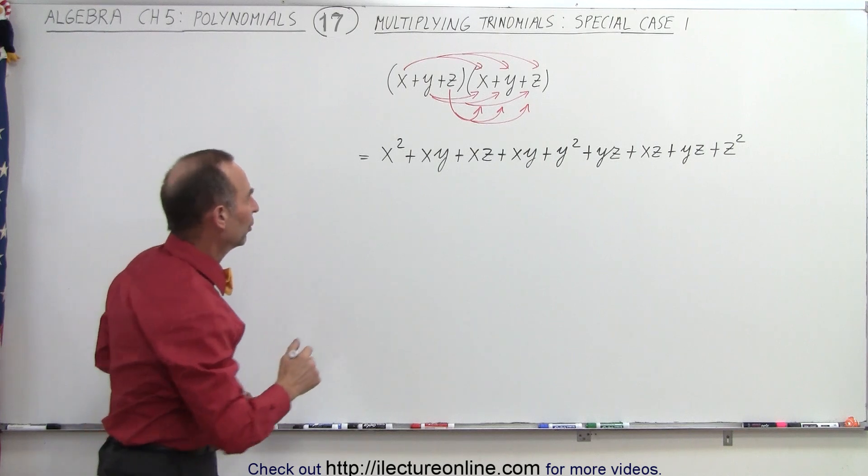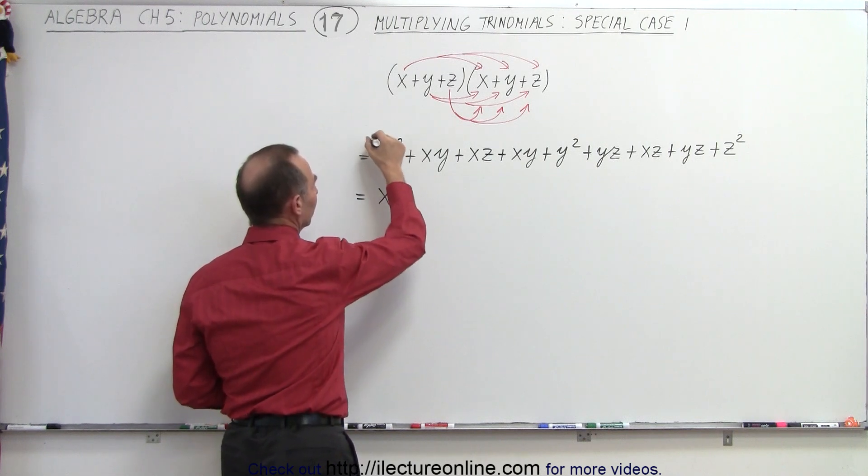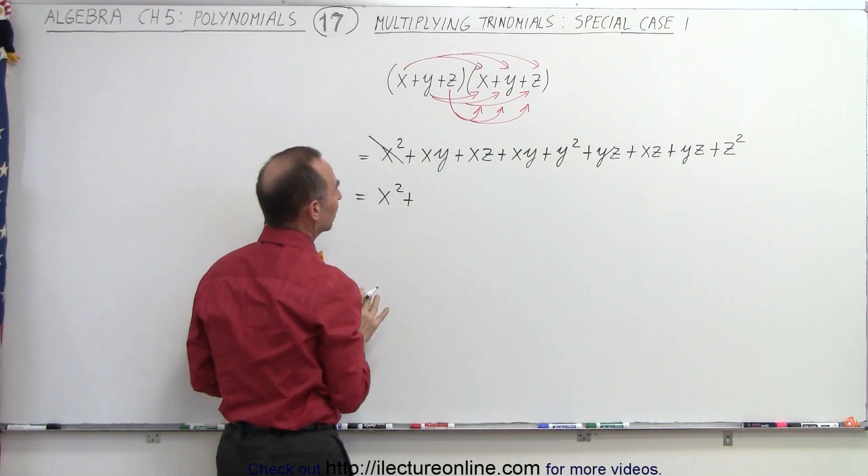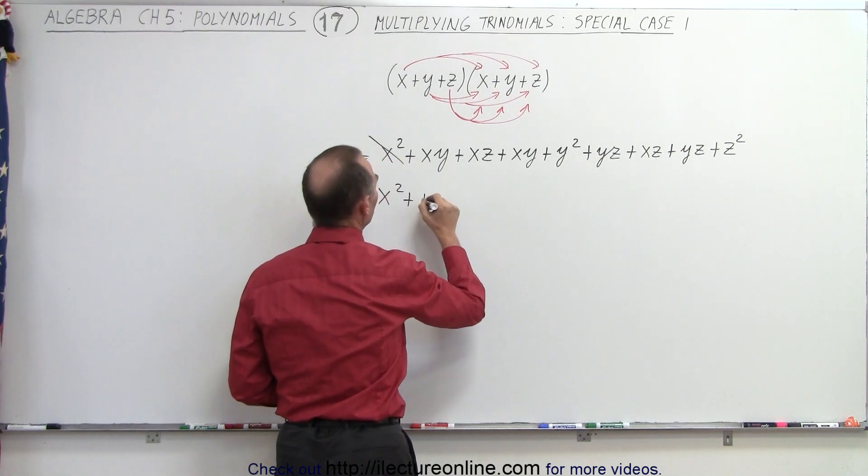So now let's combine like terms. This is equal to x² plus we have an xy, so let's go ahead and put a line through that because otherwise we get confused. x times y plus x times y, that would be +2xy.